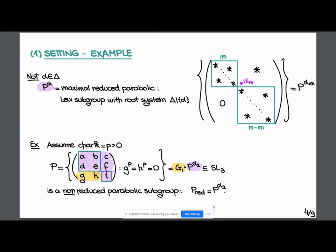We fix alpha, a simple root, and associate to alpha P_alpha, a maximal reduced parabolic subgroup—maximal reduced because the Frobenius kernel is an example of a non-reduced group scheme. In characteristic p, we might have non-reduced group schemes. This is the reduced parabolic subgroup with Levy subgroup having root system delta without alpha. Here's an example on the right where the group is SL_N. We fix alpha_M as a simple root, and the drawing on the right represents the parabolic subgroup associated to that root.